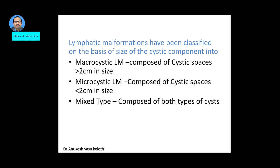Another classification is based on the size of the cystic component. Macrocystic lymphatic malformation contains cystic spaces of size more than 2 cm. Microcystic lymphatic malformation has cystic spaces of size less than 2 cm. The mixed type is composed of both types of cysts.